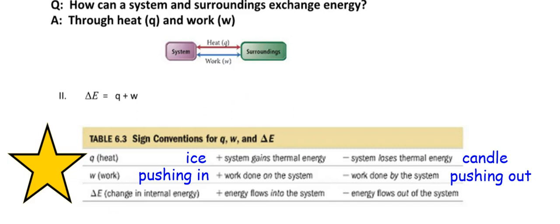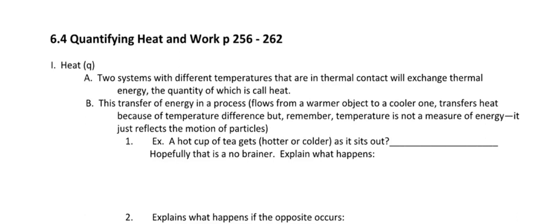Back to section 6.4: what is heat? Internal energy flows from one system to another through the exchange of heat or work. Two systems with different temperatures that are in thermal contact will exchange thermal energy — the quantity called heat. Energy always flows from the higher energy value to the lower. Temperature is not the measure of energy; it just reflects the motion of the particles.